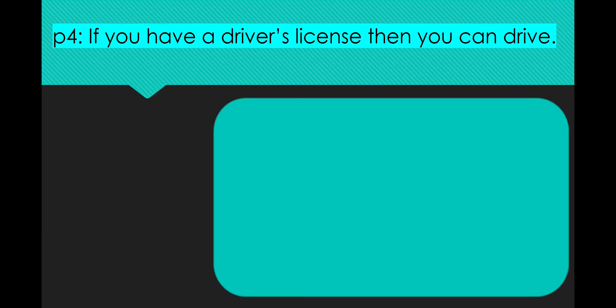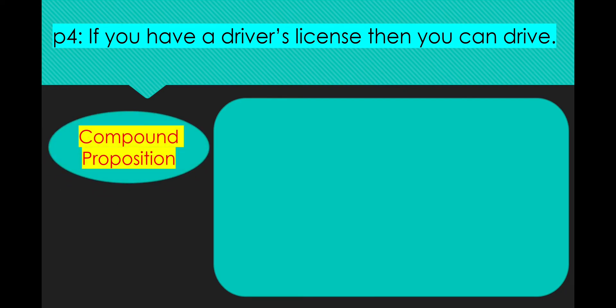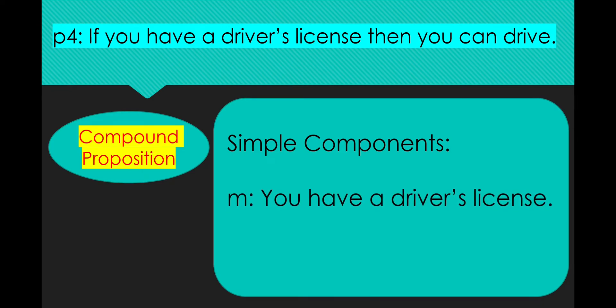If you have a driver's license, then you can drive. This is a compound proposition because of the word then. The word then connects two simple components. The first component is you have a driver's license, and the second simple component is you can drive. Therefore, the connector used here is then.